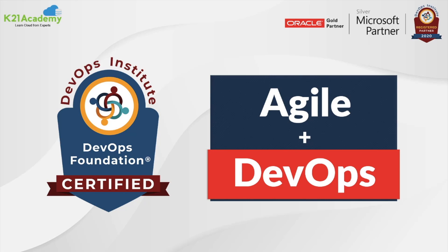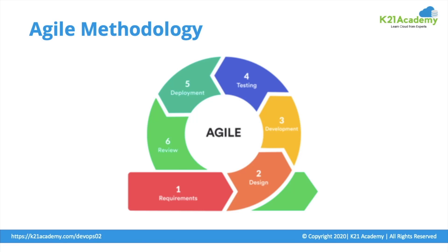Hello and welcome to K21 Academy's DevOps video series. Today, with our DevOps Institute Certified Expert Trainer, we are going to cover Agile and its relationship with DevOps. Agile is the ability to create and respond to change. It is an umbrella term for several iterative and incremental software development approaches, with each of those variations being its own Agile framework.